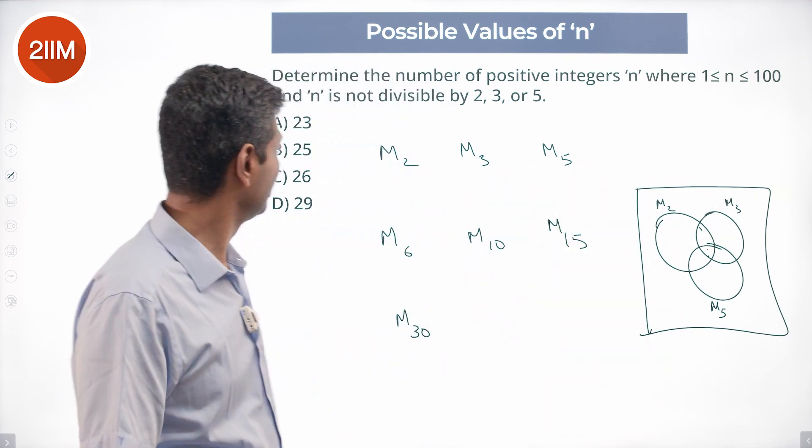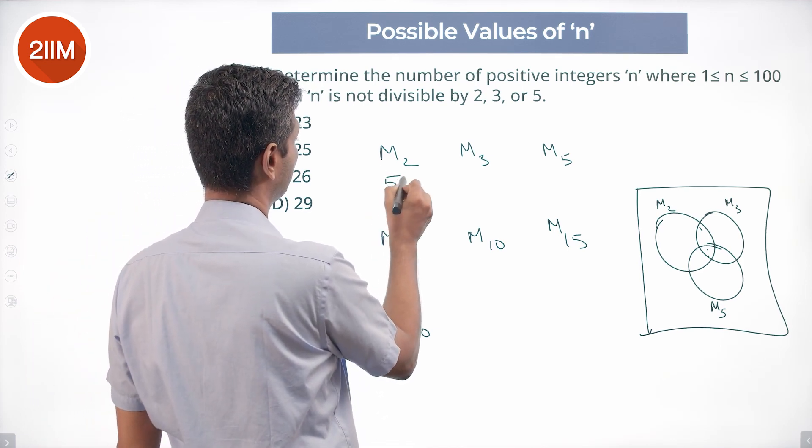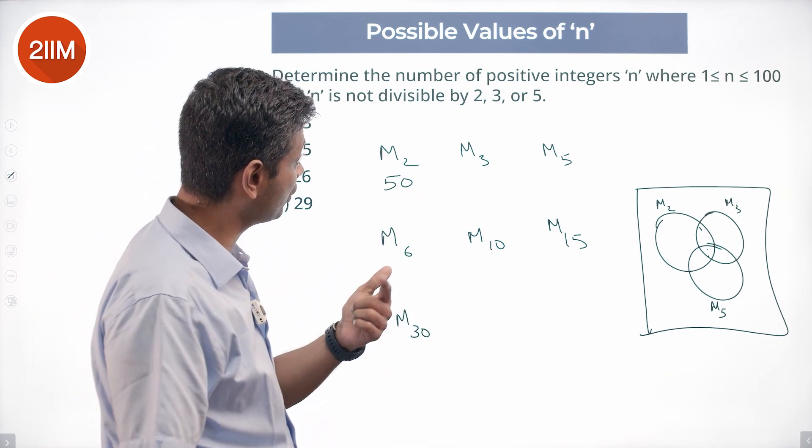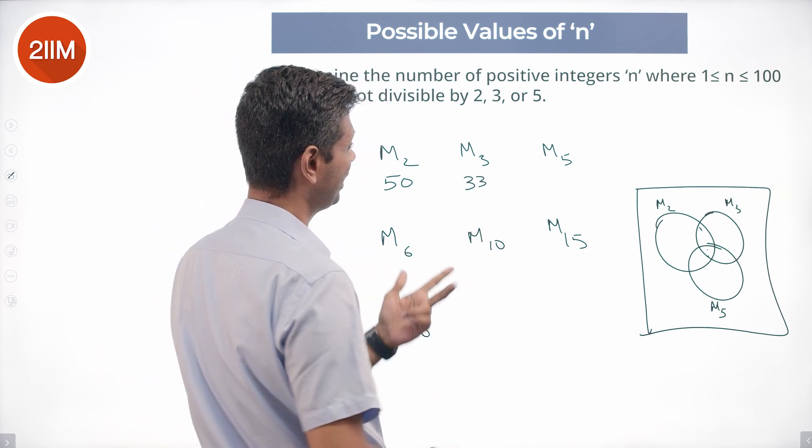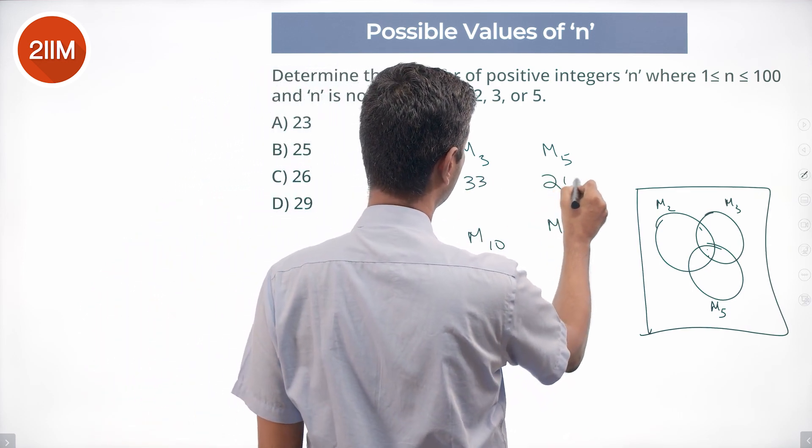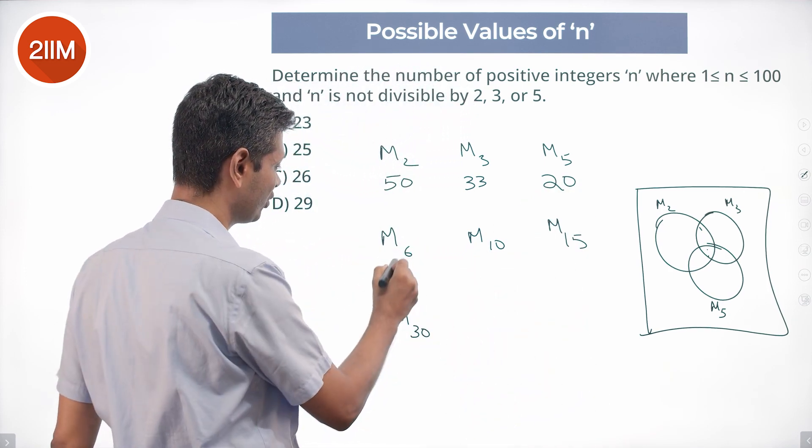M2, M3, M5. Number of multiples of 2, that is easy, 50. Multiples of 3: 3, 6, 9 till 99, that's 33.